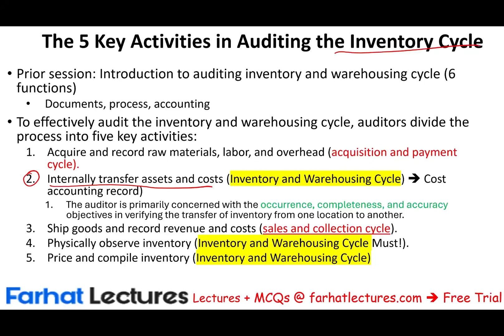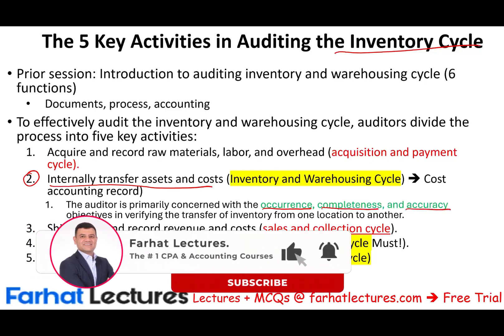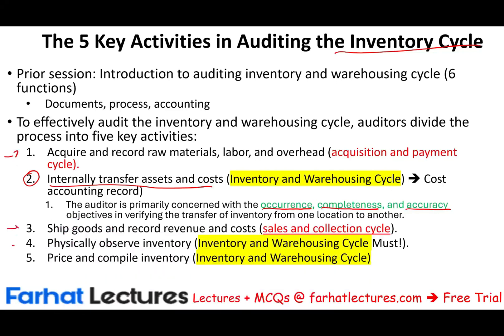Now, what is our primary concern here? When we are transferring these assets from raw material to work in process, from work in process to finished goods, from finished goods to cost of goods sold, we want to make sure we are tracking the quantity properly and valuing the transaction properly. We want to make sure that the transfer did occur, that we accounted for all transfers, and that everything is being accounted for properly. This is one of five key activities in the inventory cycle.